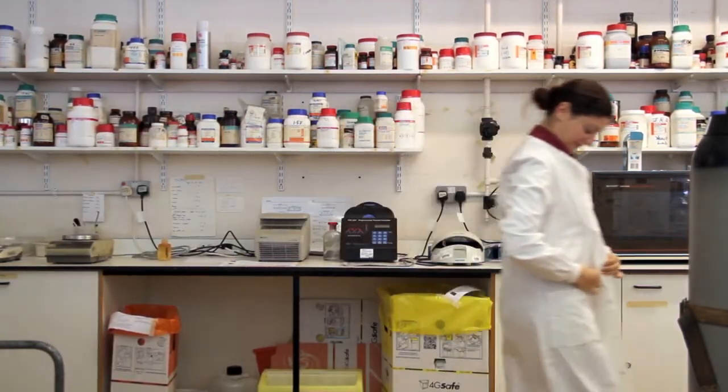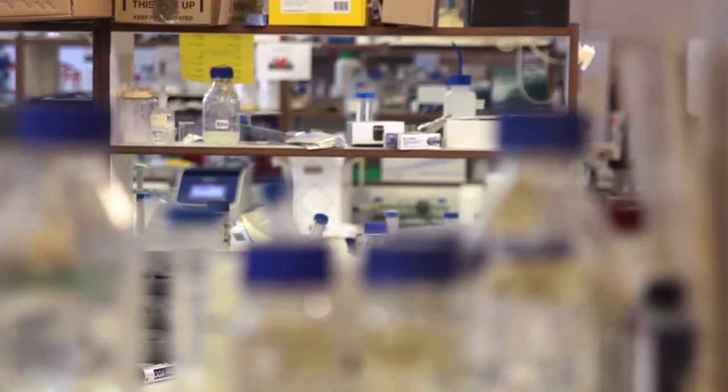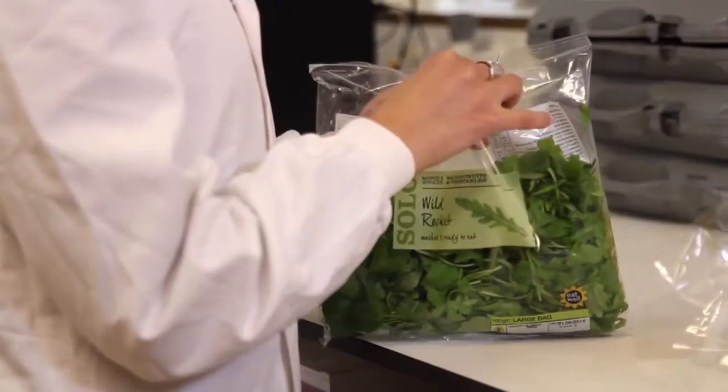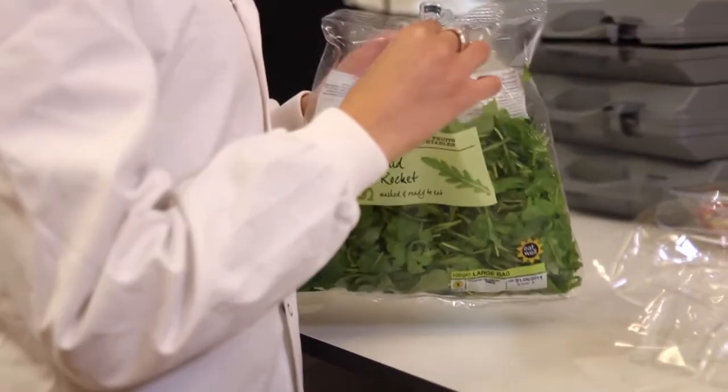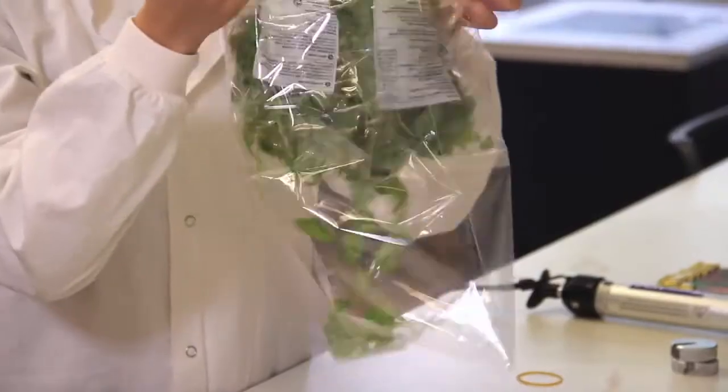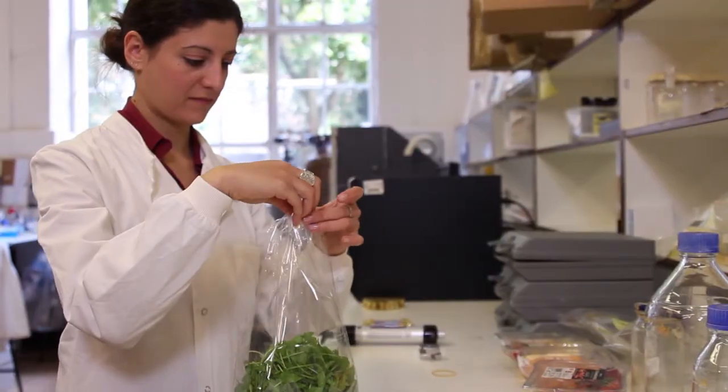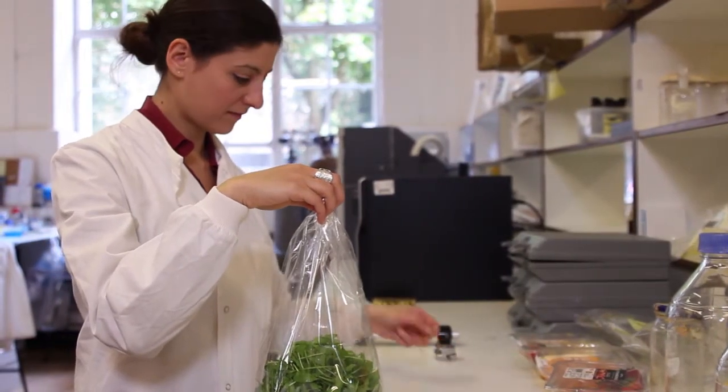The sampling process we developed for rocket and melon is very straightforward and simple. First of all, the sample is put into what is essentially an oven baking bag and this is sealed around a cutoff Eppendorf tube which acts as a sampling port.